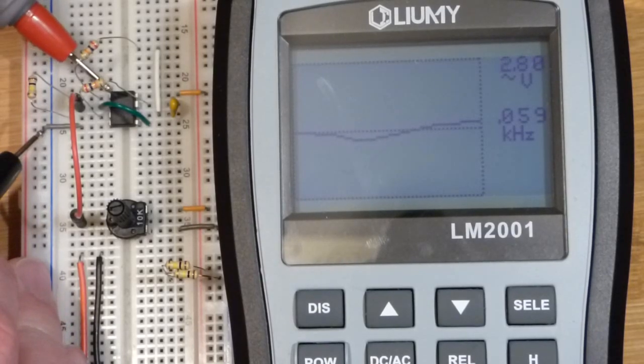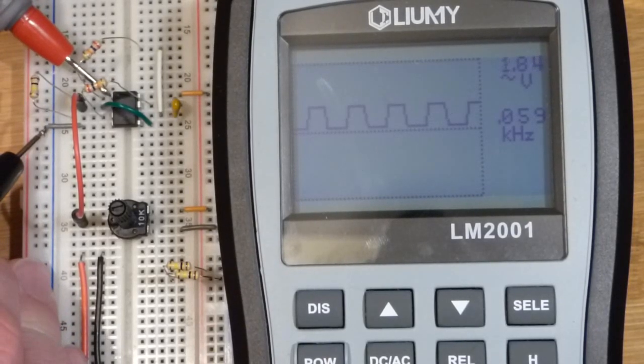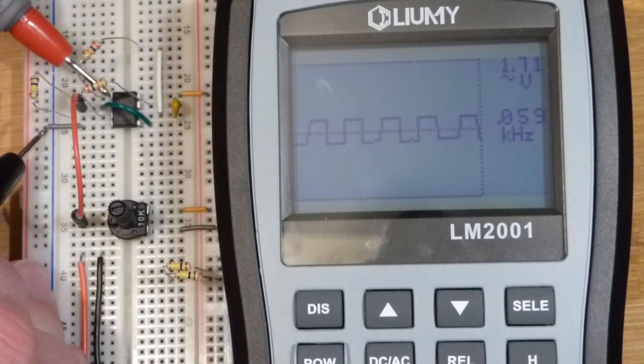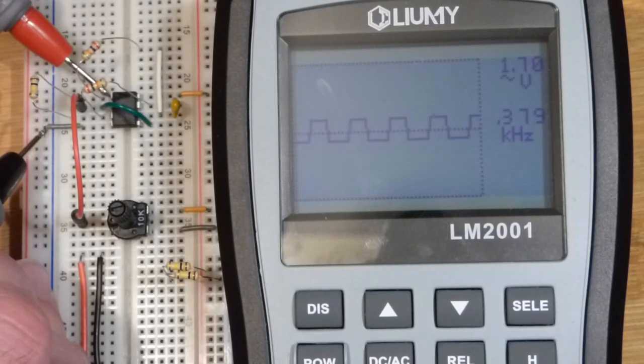Because as you can see here, it looks like a square wave on there. And it's supposed to be a square wave. But with the better oscilloscope, we clearly saw that it was a rectangle wave.